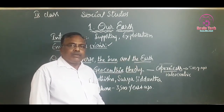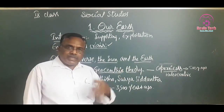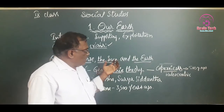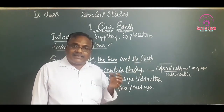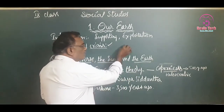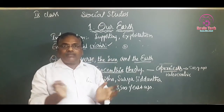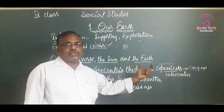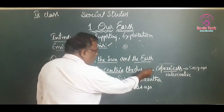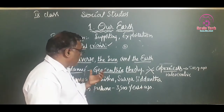About 500 years ago, Copernicus proposed a theory that many scientists accepted: the heliocentric theory, or sun-centric theory. According to his theory, the sun is in the center and all other planets revolve around the sun. This was against Ptolemy's geocentric theory. Earlier, people believed the Ptolemy theory, but Copernicus proved that the sun is in the center and all other planets revolve around it.